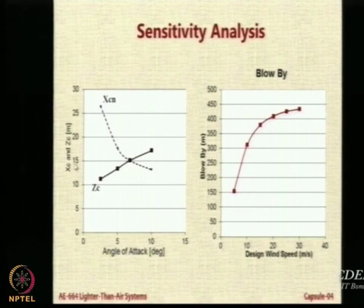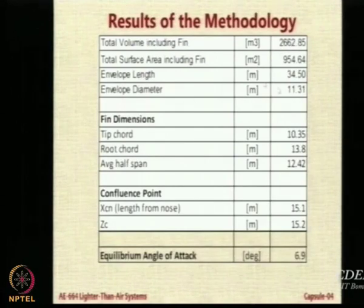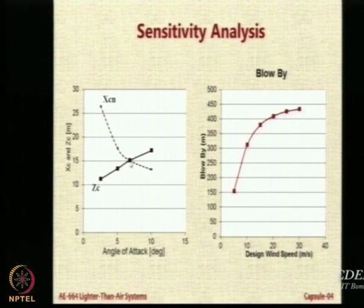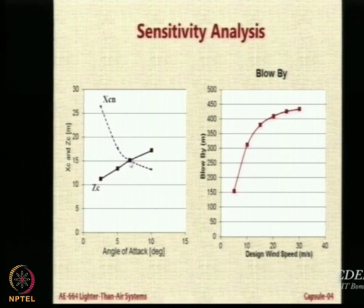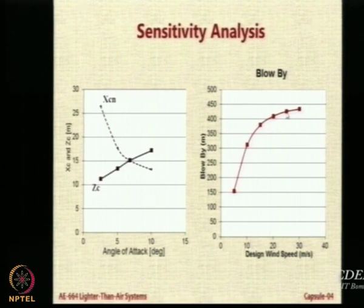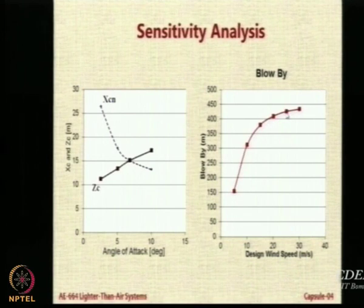We did some analysis of the angle of attack. The diameter of the aerostat is 11.31 meters. At a 15-meter location Xc and Zc, the angle of attack is around 7 degrees, and that is the optimum confluence point location. If alpha changes, the optimum confluence point changes, but at this value they both meet. The blow-by changes with wind speed — at 5 meters per second it is only 150 meters, but as wind increases to 25 meters per second it becomes around 400 to 420 meters.